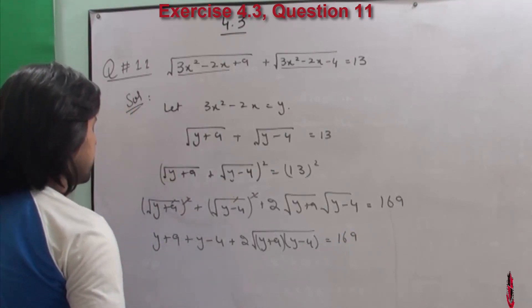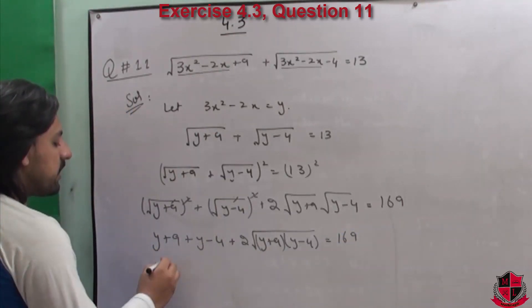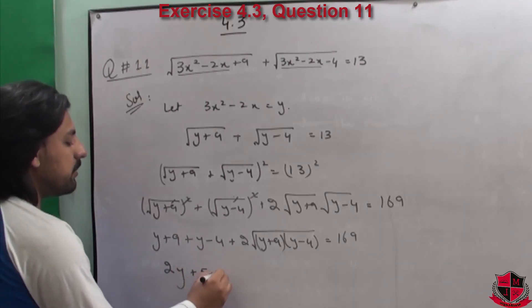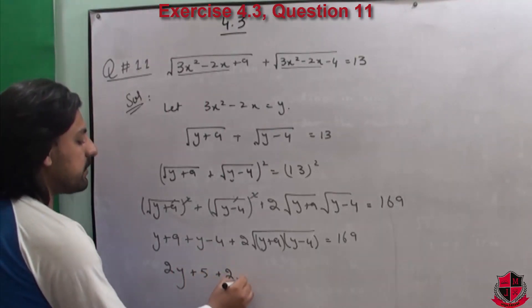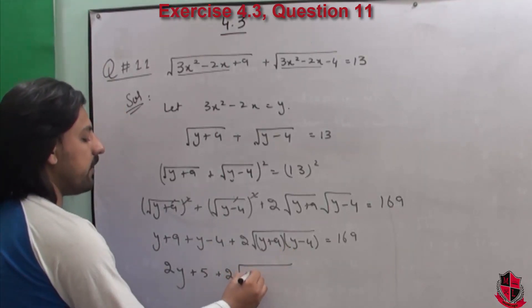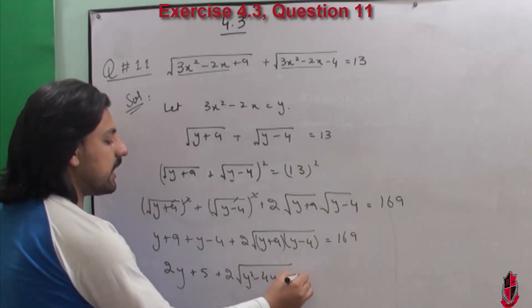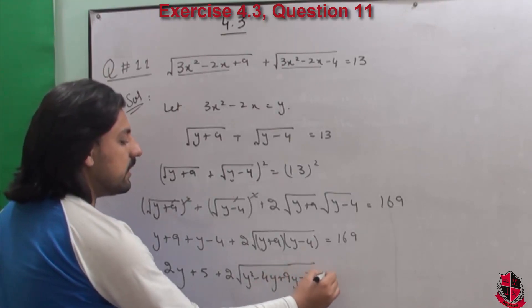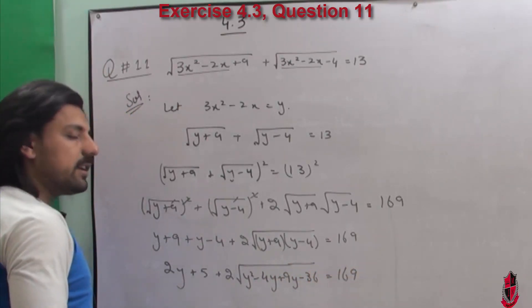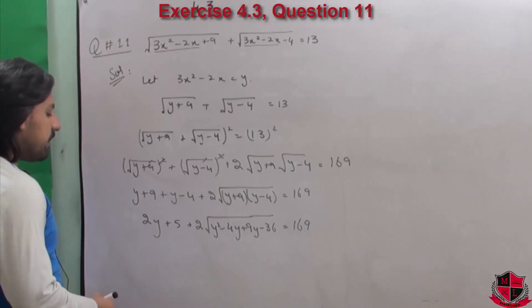y + y will become 2y, 9 - 4 will become 5. So: 2y + 5 + 2×√(y²-4y+9y-36) = 169. Inside the root, multiplying: y²+5y-36.